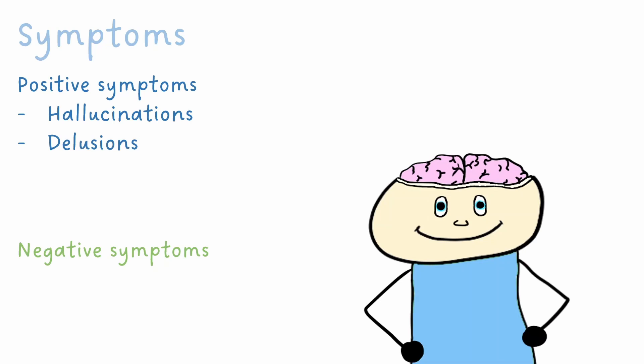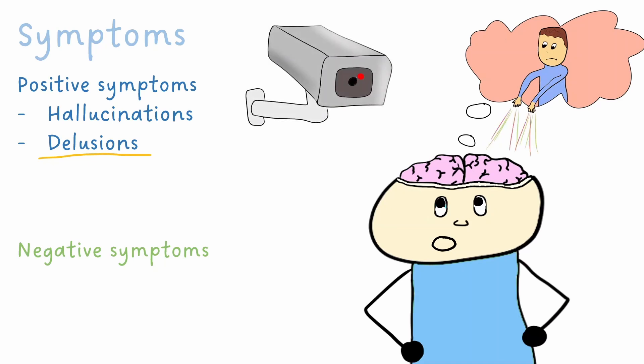Delusions are another positive symptom. This is where someone has an unshakable belief about something that is categorically untrue. In schizophrenia, delusions are often based on lack of control, where someone may believe an individual is controlling their mind or body. They're also commonly based on paranoia, for example believing that someone is constantly watching them.